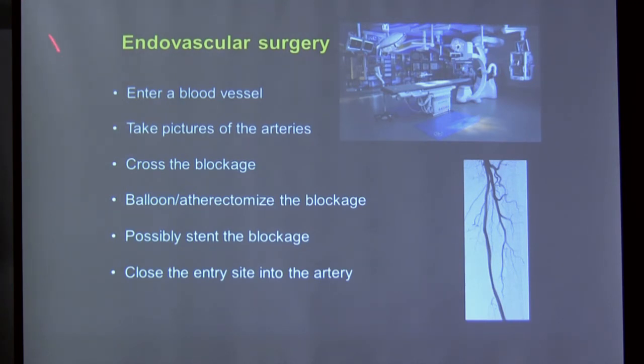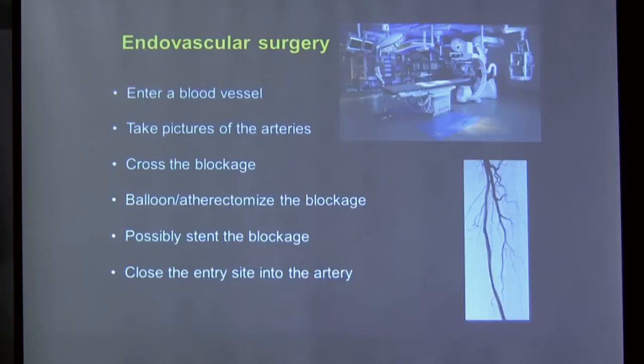The basic endovascular steps are: access a blood vessel — most commonly the groin, similar to heart catheterization — then image the arteries using contrast dye, cross any identified blockage with a wire, treat the blockage with balloon angioplasty or atherectomy, place a stent if needed, obtain final images, and close the arterial access site. Modern closure devices — small plugs — have replaced the old 20-to-30-minute manual compression, allowing earlier ambulation and discharge.